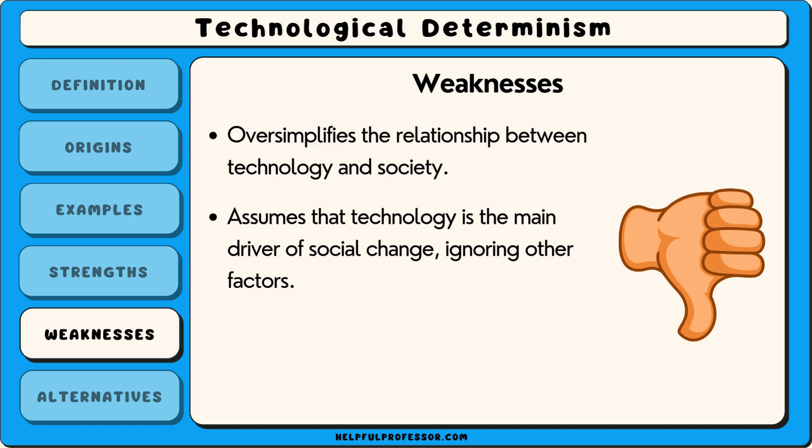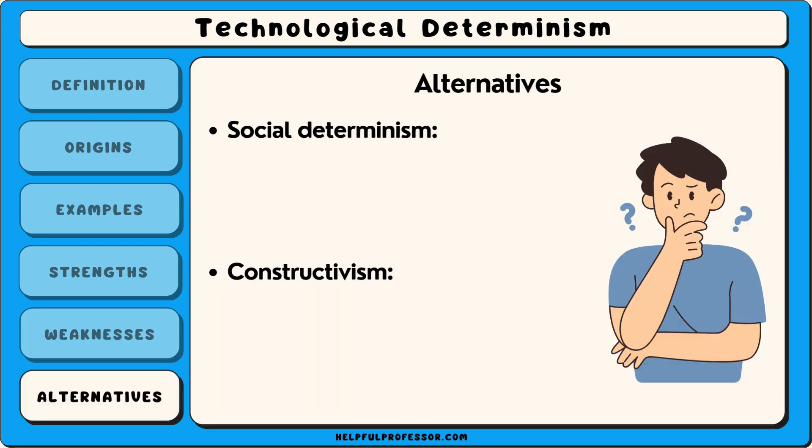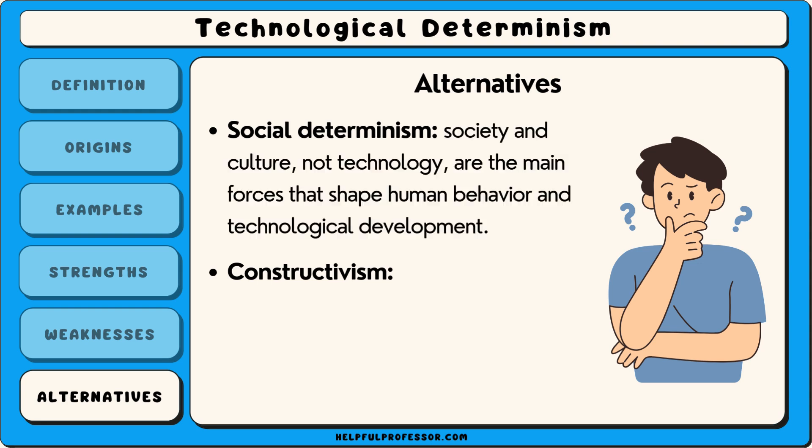Critics argue that technological determinism fails to consider the complex interaction between human agency and technological development. Alternatives to technological determinism include social determinism and constructivism. Social determinism suggests that society and culture, not technology, are the main forces that shape human behaviour and technological development. According to this view, technology is just a tool that people use to meet their social and cultural needs.